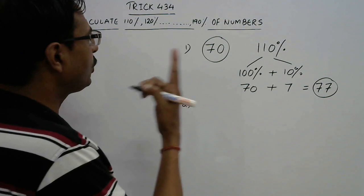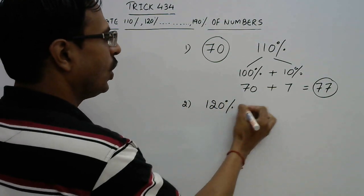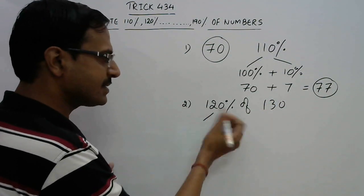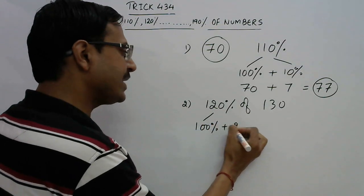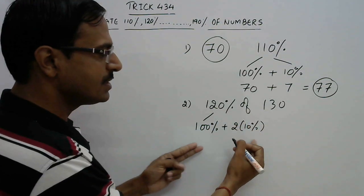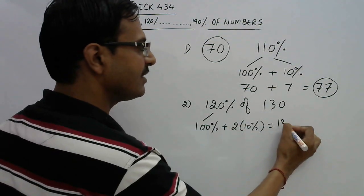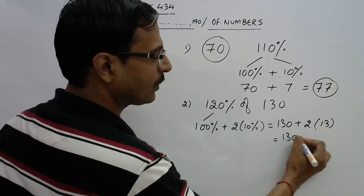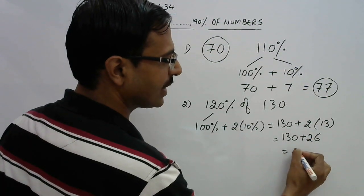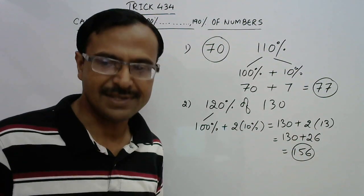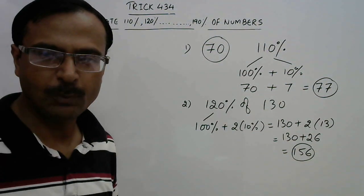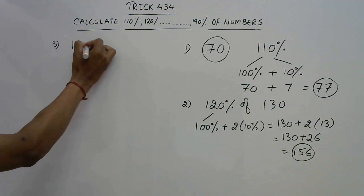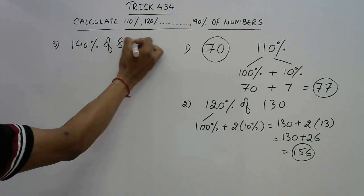For 120% of 130: consider it as 100% plus twice 10%. 100% is 130 itself. Twice 10% means 2×13 = 26. So 130 plus 26 equals 156. So 120% of 130 is 156.